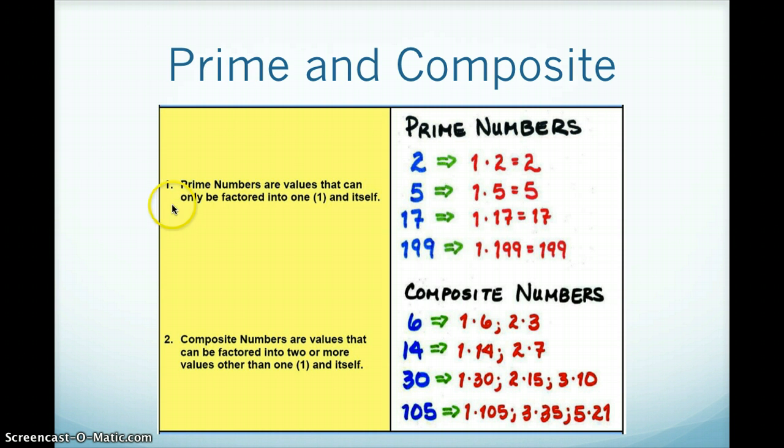So the first one is prime number. Prime numbers are values that can only be factored into 1 and itself. So that means only itself times 1 are the only factors that it has, such as 2, which is 1 times 2, because nothing else can multiply together to give you 2, 5, 1 times 5, because nothing else times anything will give you 5, any whole number times 5. Remember, the dot between a number means to multiply.